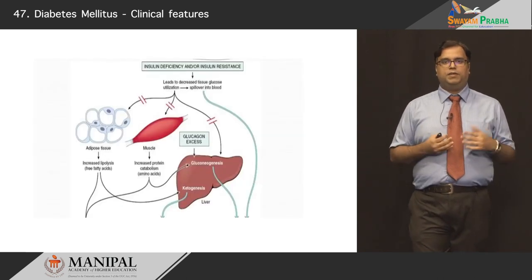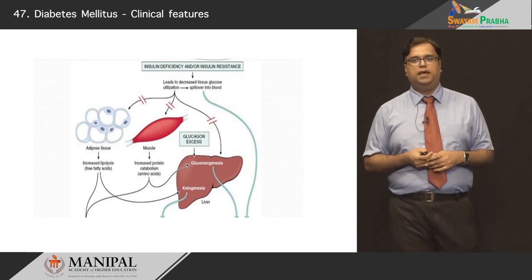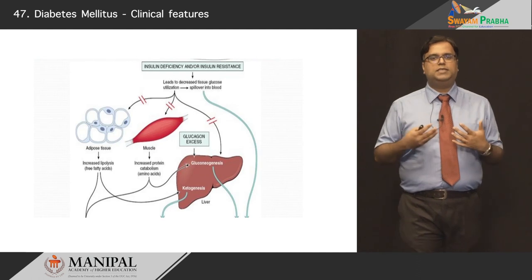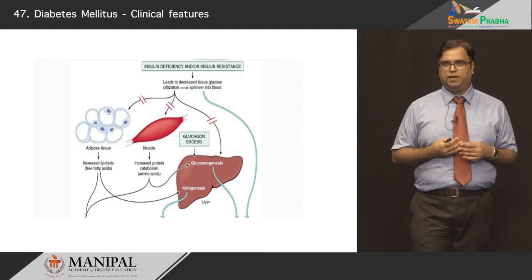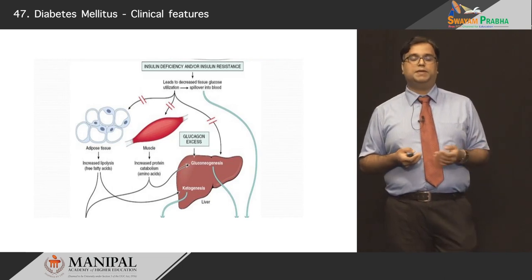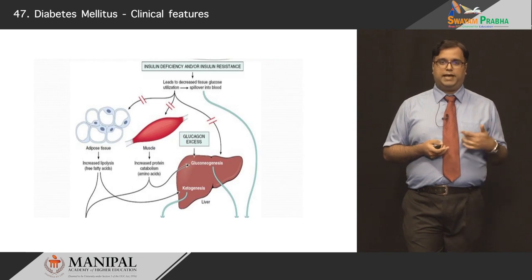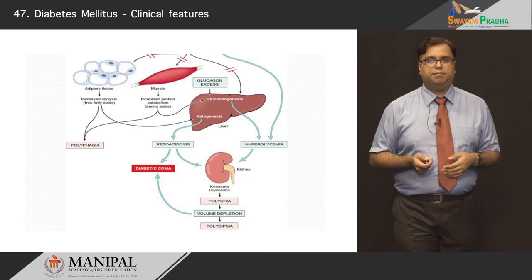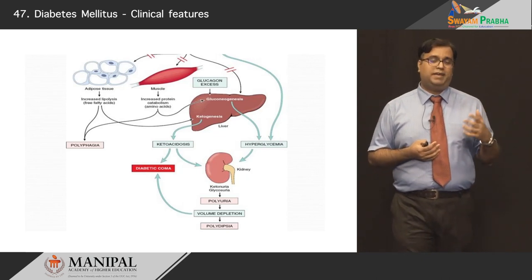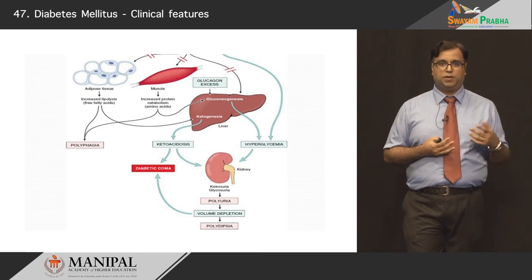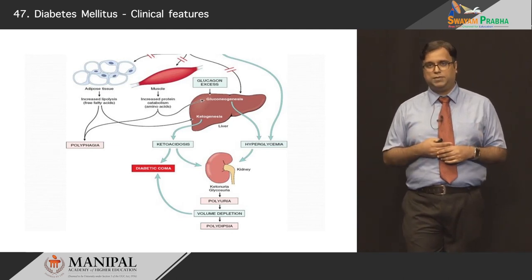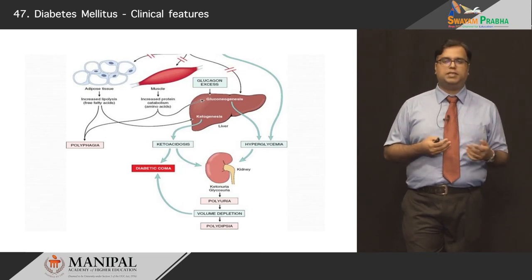This is more complex: when you have insulin deficiency or insulin resistance — type 1 and type 2 respectively — it leads to decreased tissue glucose utilization. Glucose accumulates in your plasma, called hyperglycemia, and will not be utilized by fat, muscle, or liver. As a downstream effect, you get polyphagia mainly because glucose levels are very high and not utilized. Increased lipolysis releases free fatty acids, contributing to polyphagia. In muscle, increased protein catabolism breaks down protein in the place of glucose, also resulting in polyphagia — the patient has more hunger.